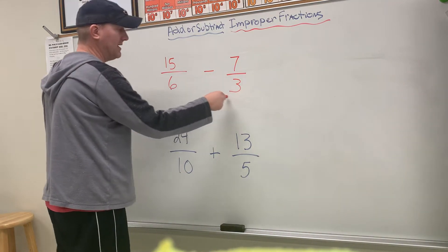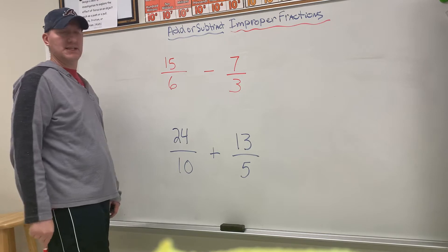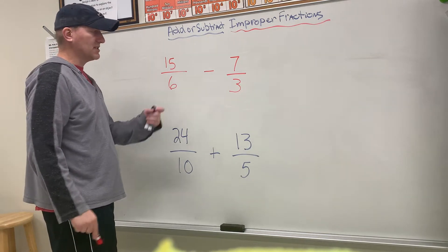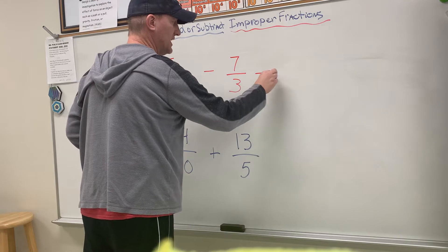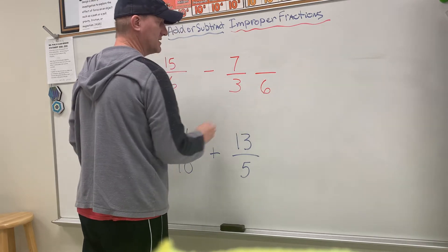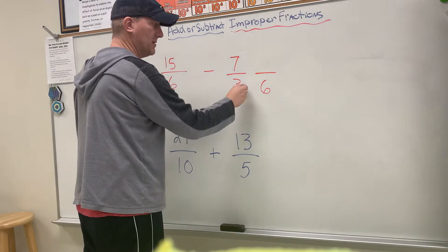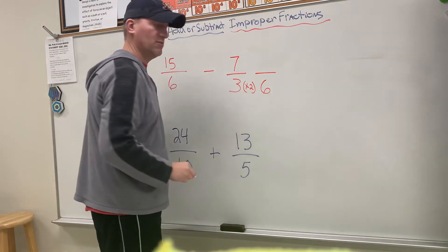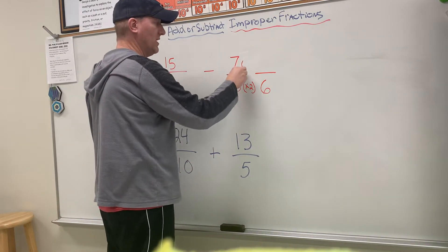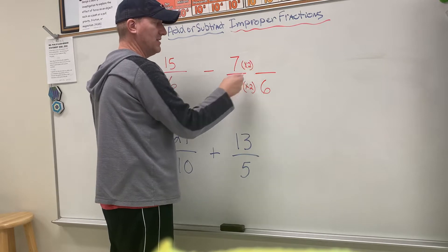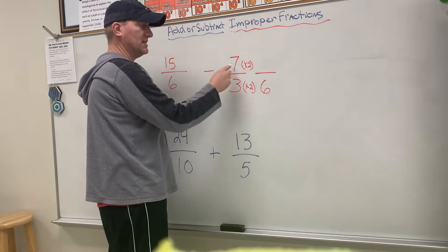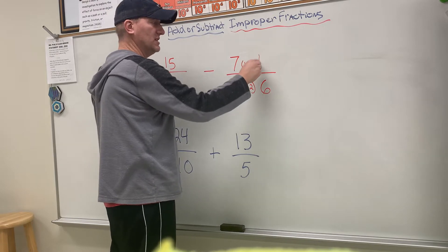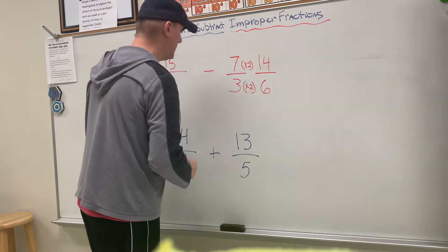Well, I know 3 goes into 6, so 6 could be my common denominator. How am I going to change this into a 6? I'm going to multiply both sides by 2. Whatever I do to the denominator, I have to do to the numerator. So 3 times 2 is 6, 7 times 2 is 14.